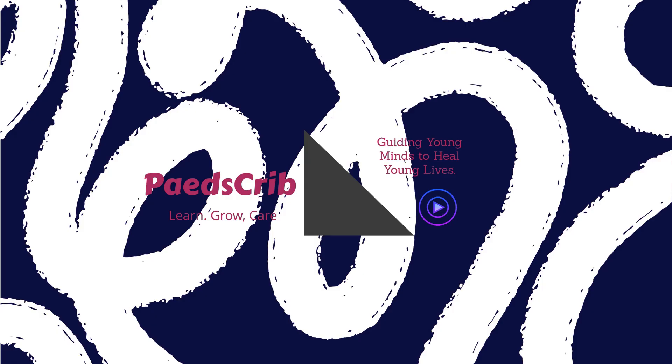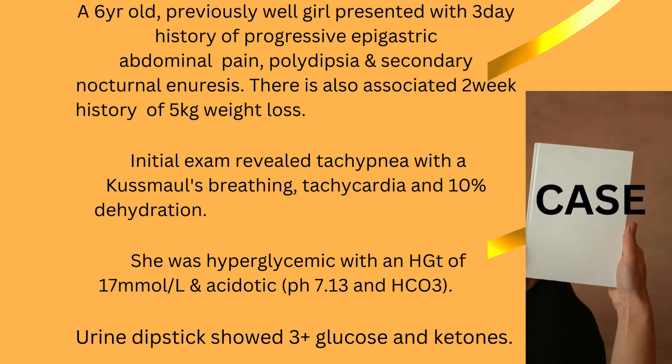Our case for today is a six-year-old previously well girl who presented with a three-day history of progressive epigastric abdominal pain, associated with polydipsia and secondary nocturnal enuresis. She also had a two-week history of 5 kg weight loss. On initial examination, she was tachypneic with Kussmaul breathing, tachycardic, with 10% dehydration. She was hyperglycemic with an HGT of 17, and acidotic with a pH of 7.13 and a bicarb of 3.8. A urine dipstick revealed ketonuria and glycosuria.